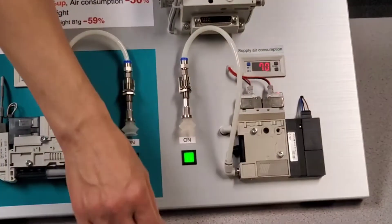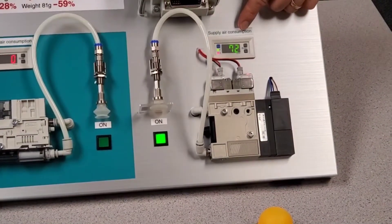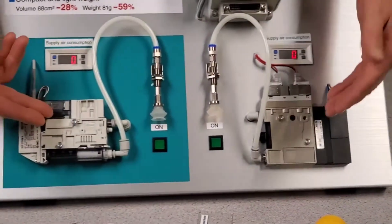When we run the ejector or the Venturi, you will see that the flow does not change. The Venturi is constantly consuming air and creating vacuum.